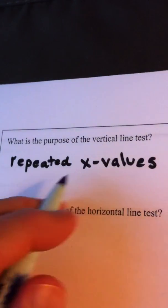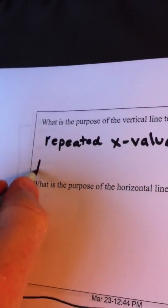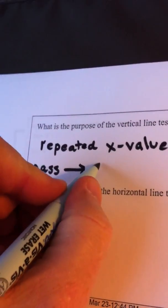So the vertical line test tests for repeated x-values. If you pass the vertical line test, that means you have a function.